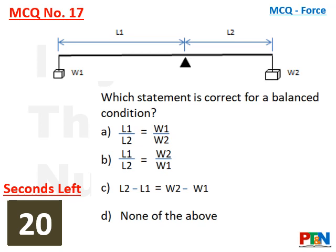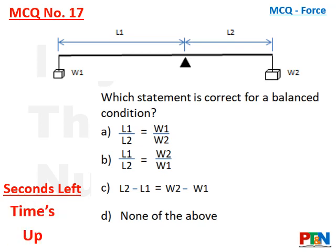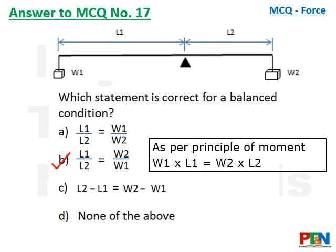Next MCQ: you have to choose which relation is correct for a balanced condition. 20 seconds timer. The correct answer is option B. The principle of moment states W1 × L1 equals W2 × L2. Cross-transferring gives option B.